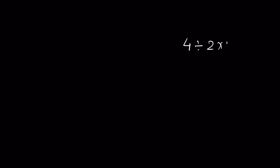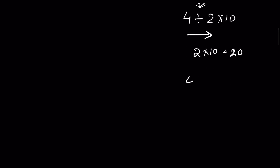Whenever you get both multiplication and division in the same line — for example, 4 divided by 2 times 10 — following PEMDAS you won't do multiplication first. You apply the left-to-right rule: solve from left to right, whichever comes first. So 4 divided by 2 is done first, giving 2, then 2 times 10 equals 20. Similarly, 4 times 2 divided by 10: from left to right, multiplication comes first, so it is 8 divided by 10.